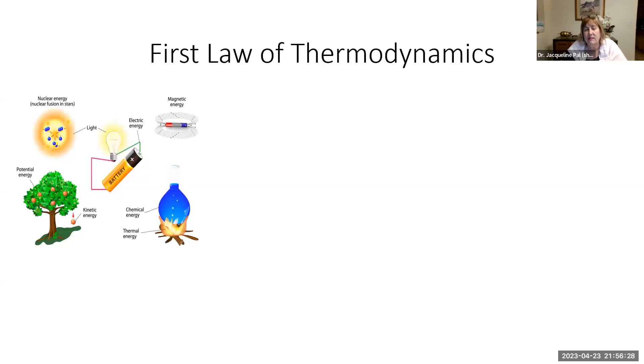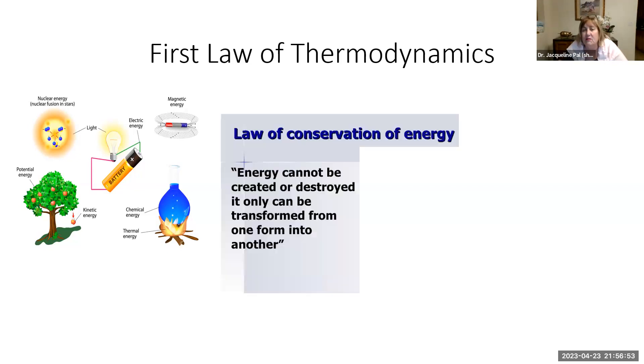So we all know there's lots of different types of energy out there. We know that we have electrical energy when we put a battery into something. We know that we have magnets, magnetic energy. We know that there's heat from the sun and heat from a fire. And all of these different types of energy have to follow what's called the first law of thermodynamics and that is also known as the law of conservation of energy.